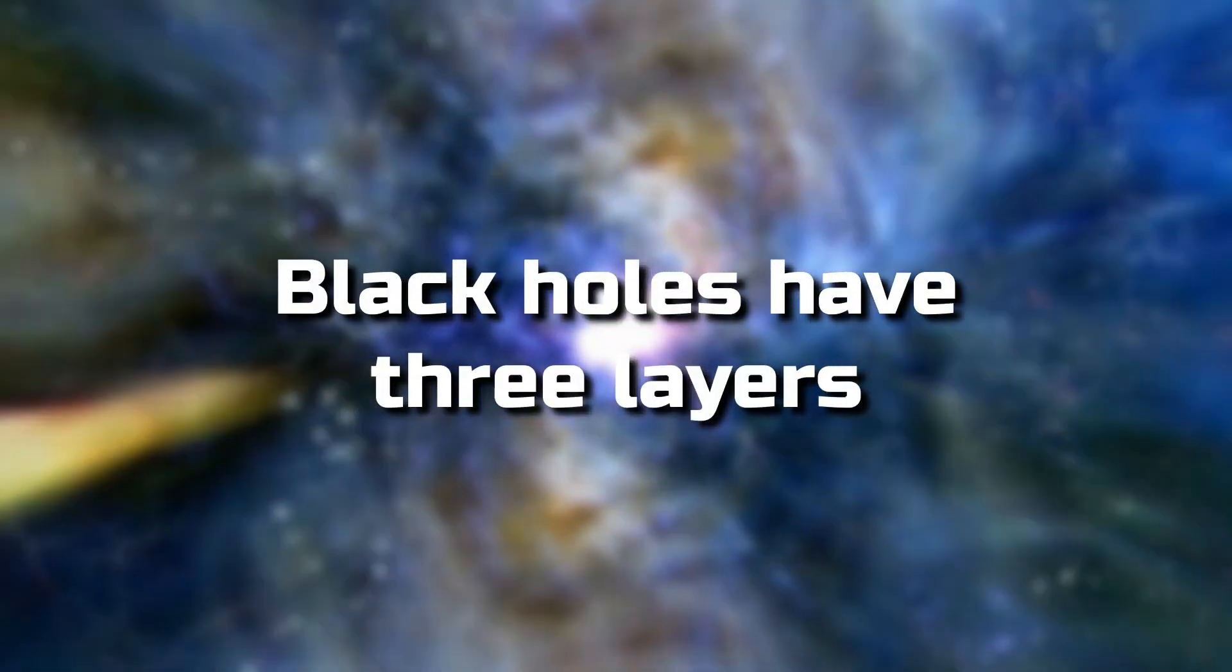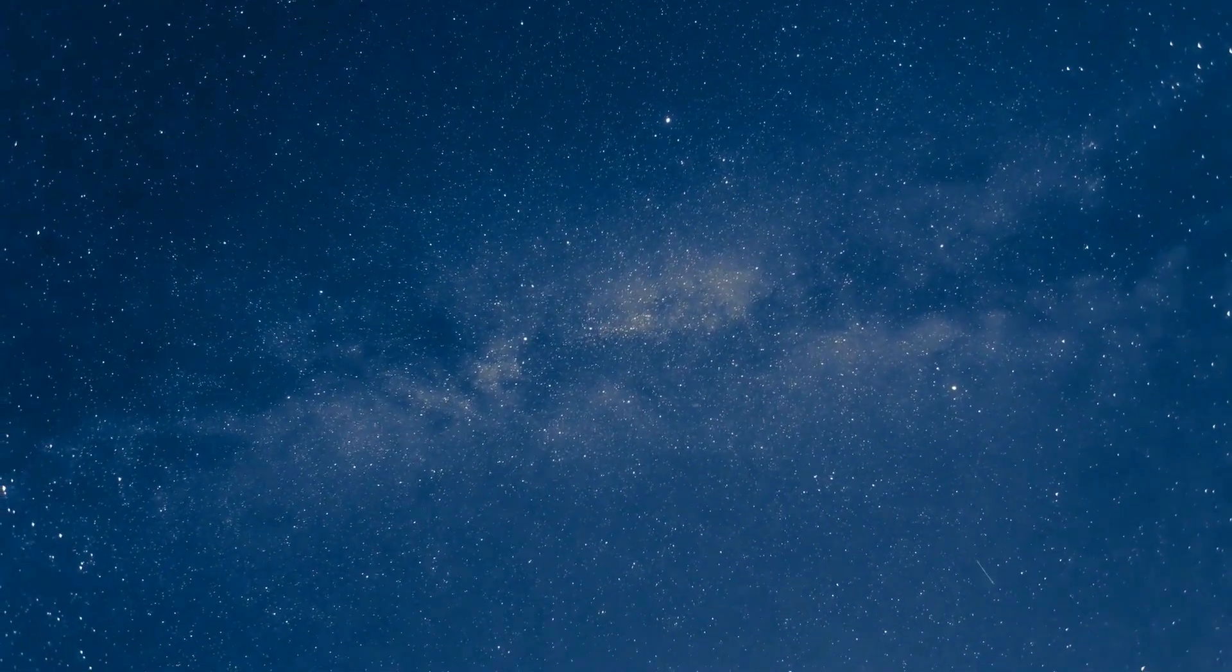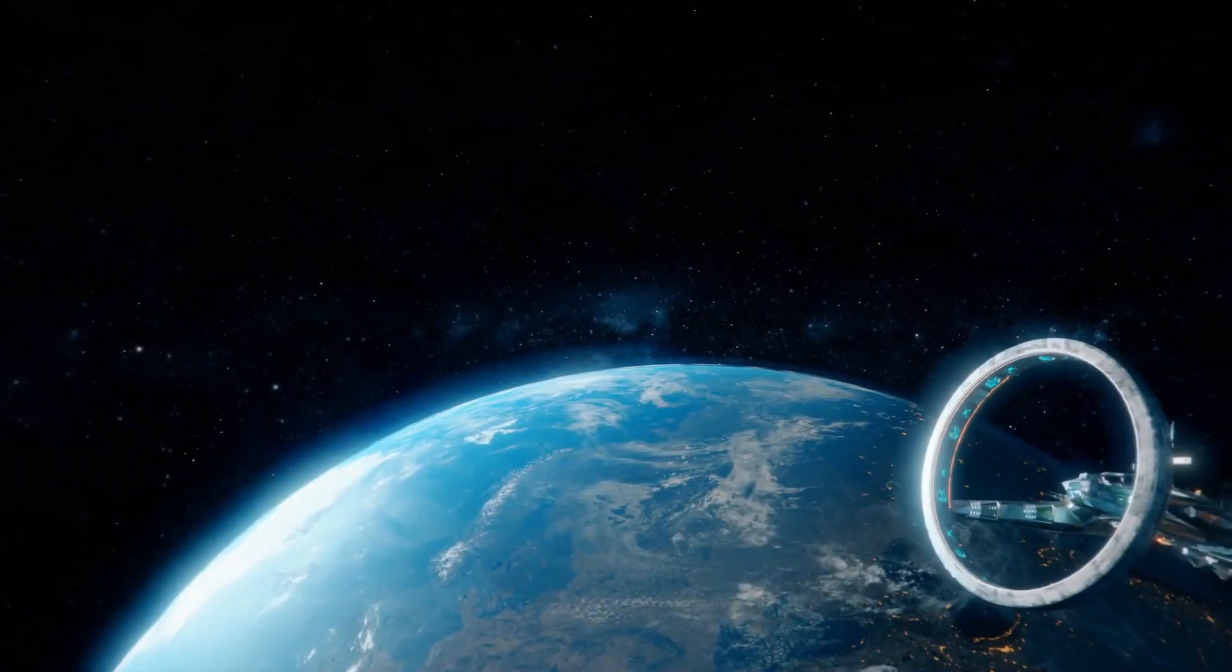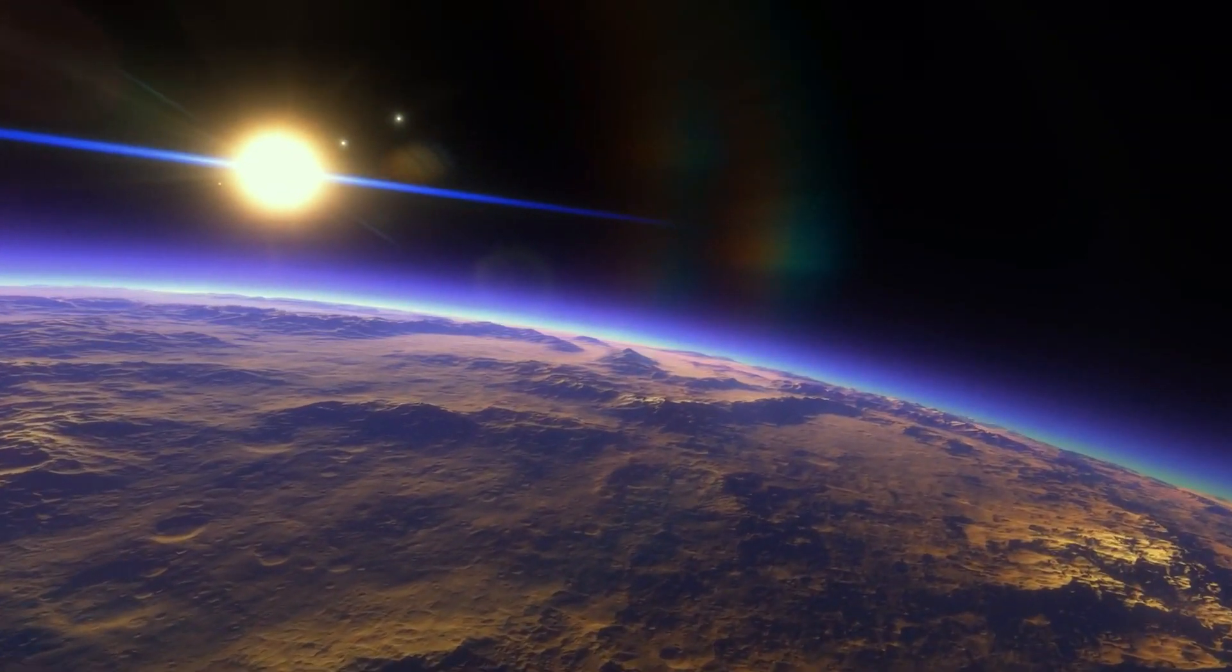Black holes have three layers, the outer and inner event horizon, and the singularity. The event horizon of a black hole is the boundary around the mouth of the black hole, past which light cannot escape. Once a particle crosses the event horizon, it cannot leave. Gravity is constant across the event horizon.